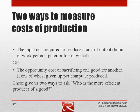Another way to measure cost is the opportunity cost of producing a good — how much wheat did we have to give up per computer produced? We could think of the cost of a computer as 100 hours of labor, or as 10 tons of wheat. Both are important pieces of information and both give us ways to ask who is the more efficient producer of a good.